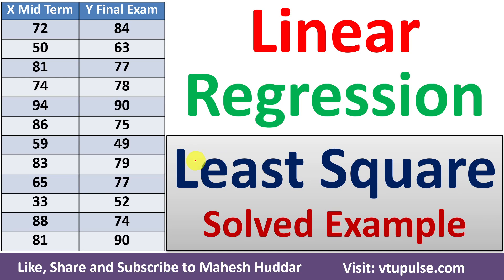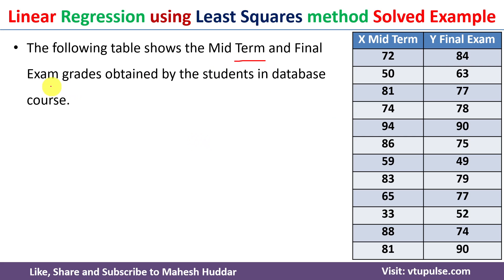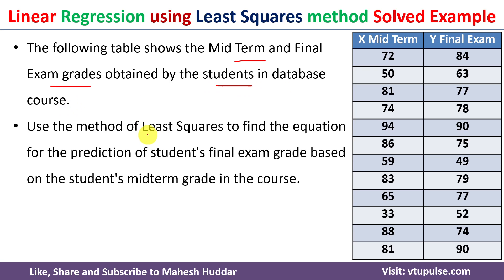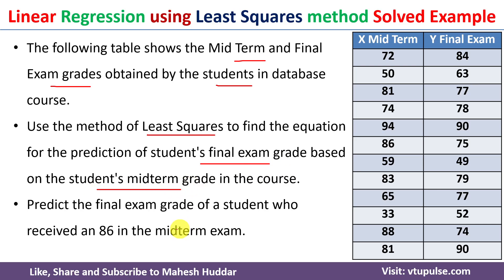Welcome back. In this video I will discuss how to use the least square method to predict final exam grades given midterm grades, with the help of a simple solved example. In this case we have been given the midterm and final exam grades obtained by a student in a database course. We need to use the least square method to find the best fitting line for the given dataset and then predict the final exam grades given the student's midterm grade of 86.